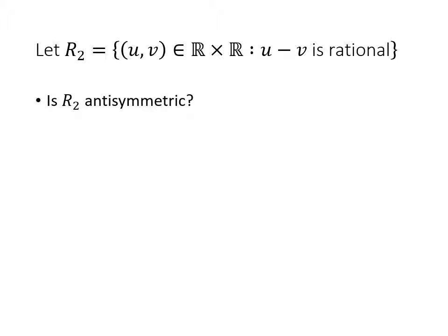This last one, we're asking, is R2 antisymmetric? Again, antisymmetric doesn't just mean not symmetric. We're going to talk about symmetric a little bit later. Antisymmetric is an if-then.